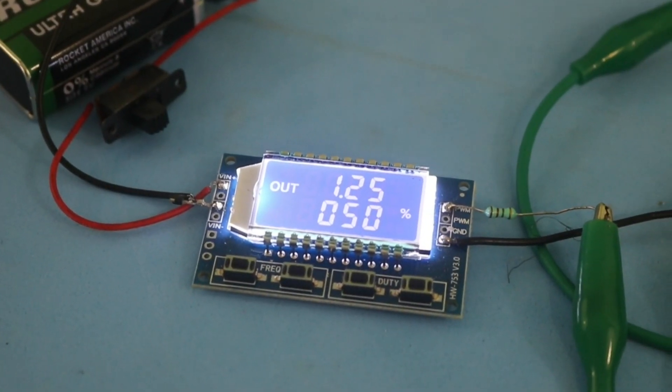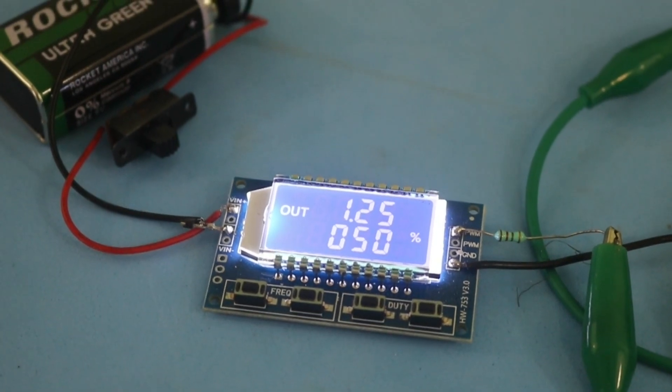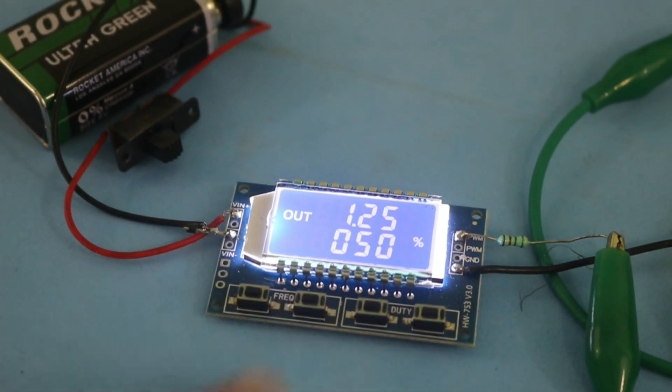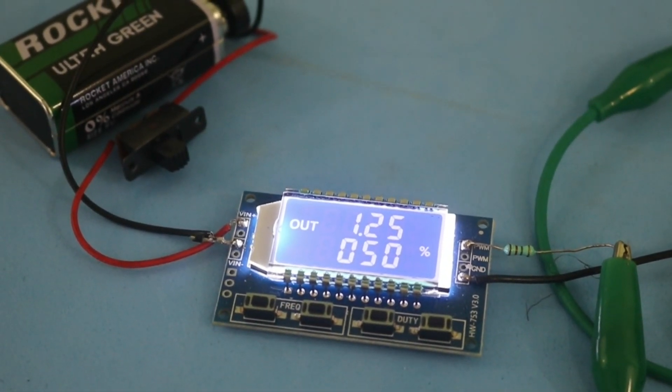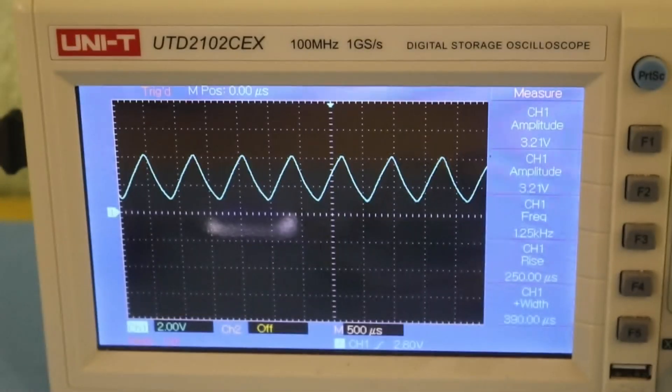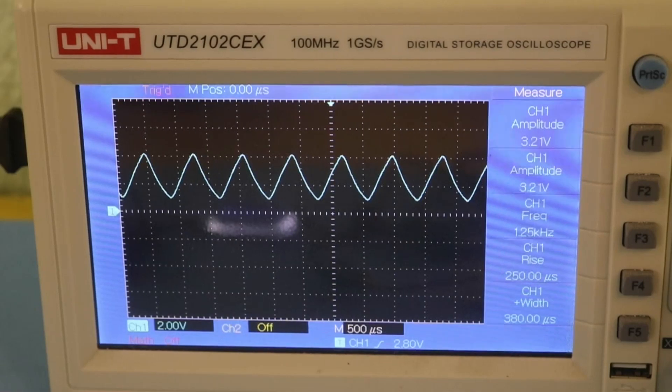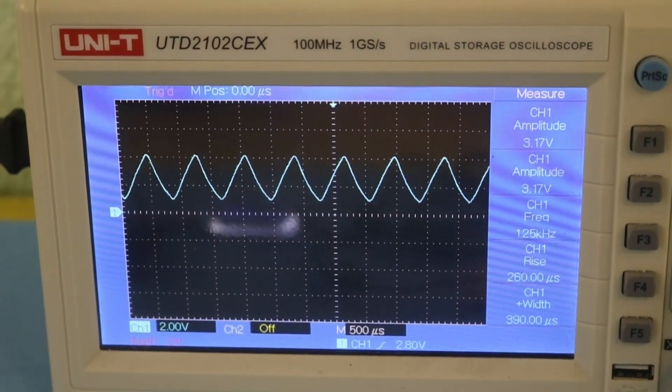If you use a different frequency than the one given by the formula, for example, here I have 1.25 kilohertz, then the output of the circuit is no longer a sine wave. It looks more like a triangular wave.